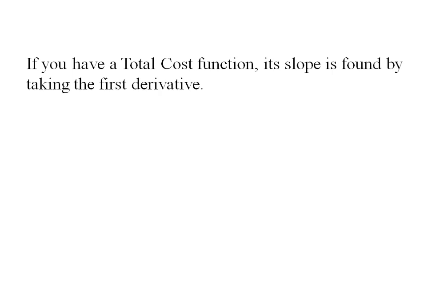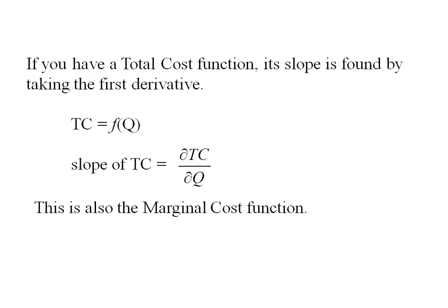Now, if you have a total cost function, its slope is found by taking the first derivative. So total cost is a function of output, and the slope of total cost would be the partial derivative of total cost with respect to output. Another name for this is the marginal cost function.